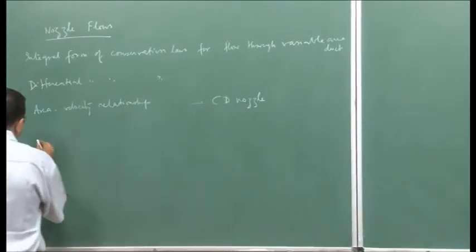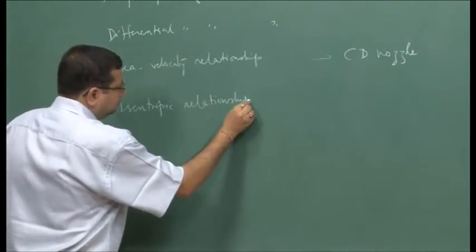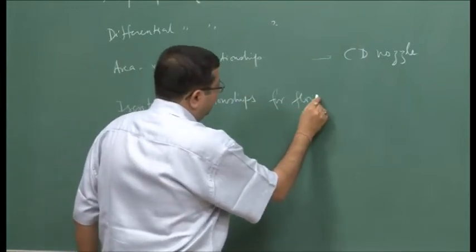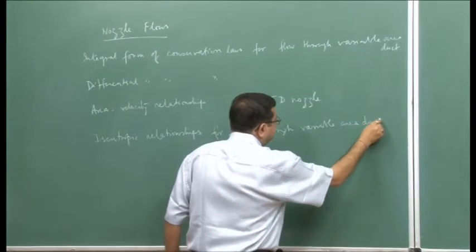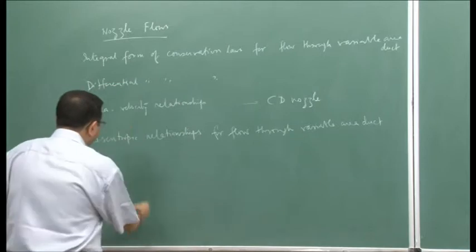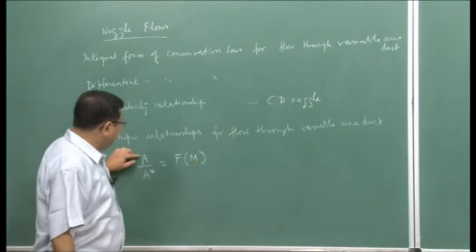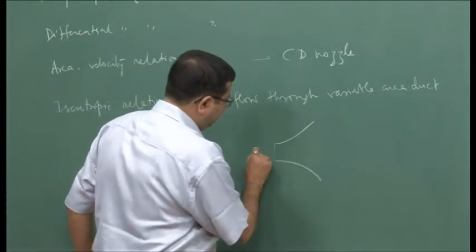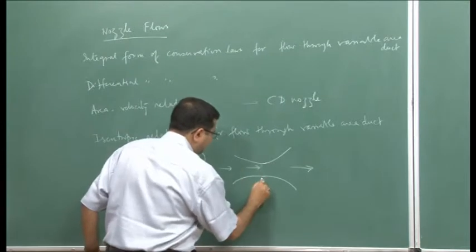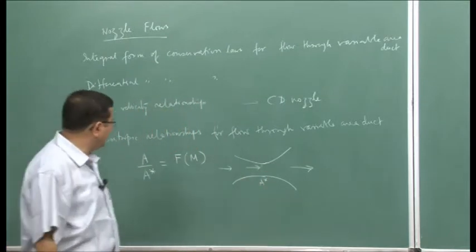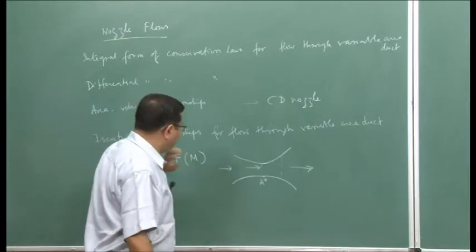Through the area-velocity relationship, we have shown that in order to expand a subsonic flow to a supersonic flow, we need to go through a minimum area, which is why we need a converging-diverging nozzle. In the last lecture, we derived the isentropic relationships for flow through a variable area duct, including the relationship for the area ratio as a function of Mach number. The minimum area is A*, the throat area, and at any location with area A, we have a Mach number from the isentropic relationship.